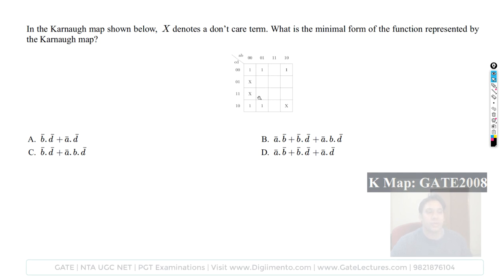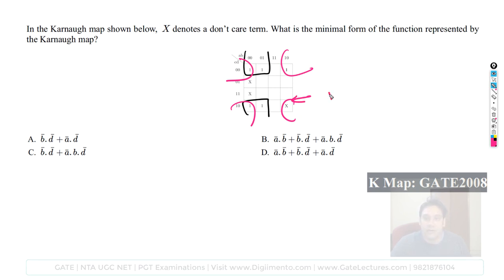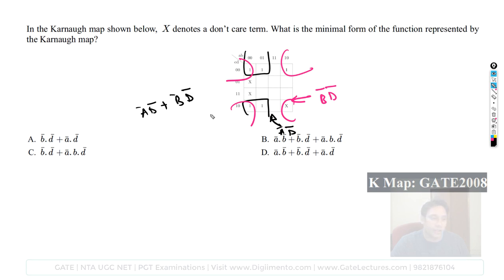Next question: the K-map has don't cares (X) and blanks representing zero. Find the minimal SOP. Two sub-cubes are possible: the four corners give A-complement·D-complement, and another sub-cube gives B-complement·D-complement. The expression is A-complement·D-complement plus B-complement·D-complement, matching option A — the correct answer.